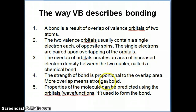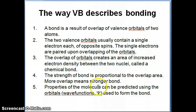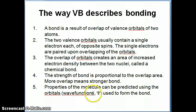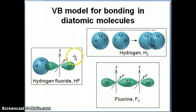Once you get a stronger bond, you can then make calculations about energy, which is really what we're getting at — we're trying to get some energy values out of these calculations. The properties of the molecule itself can be predicted using the wave functions that are used to form the bond. I want to illustrate some examples of this type of bonding using the valence bond model.